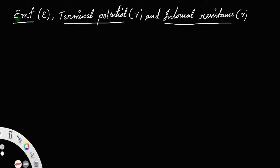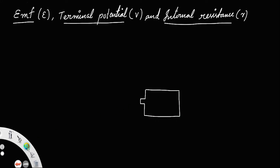What is the relationship between EMF, terminal potential, and internal resistance of a cell? Let us consider a cell — a battery like this — every battery has a positive terminal and a negative terminal.